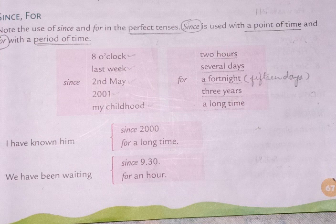On the right-hand side, you can see examples for 'for'. For is used with a period of time — when the length or time limit is given. For example: for 2 hours, for several days, for a fortnight (fortnight means 15 days), for 3 years, for a long time.